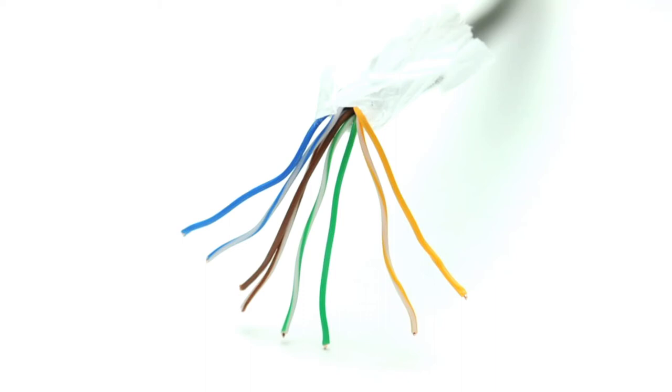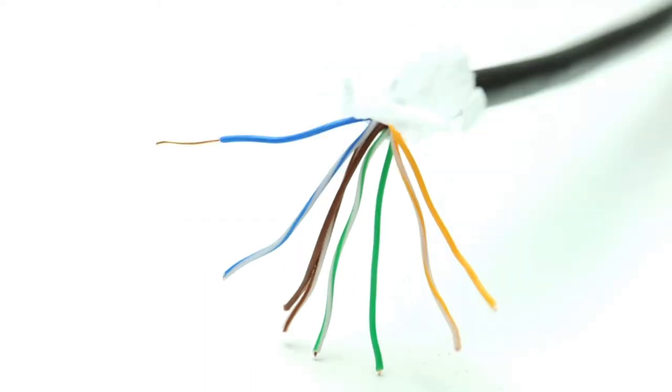Each of the four pairs are made up of two individual wires that are twisted together. The individual wires, or conductors, are made from 24-wire gauge solid pure copper wire.